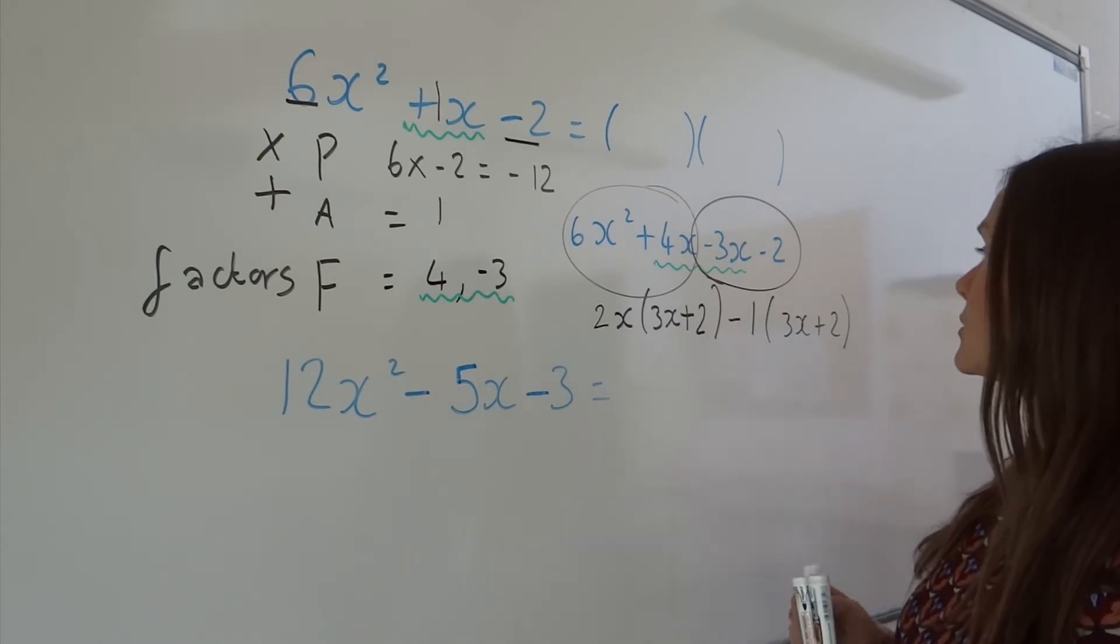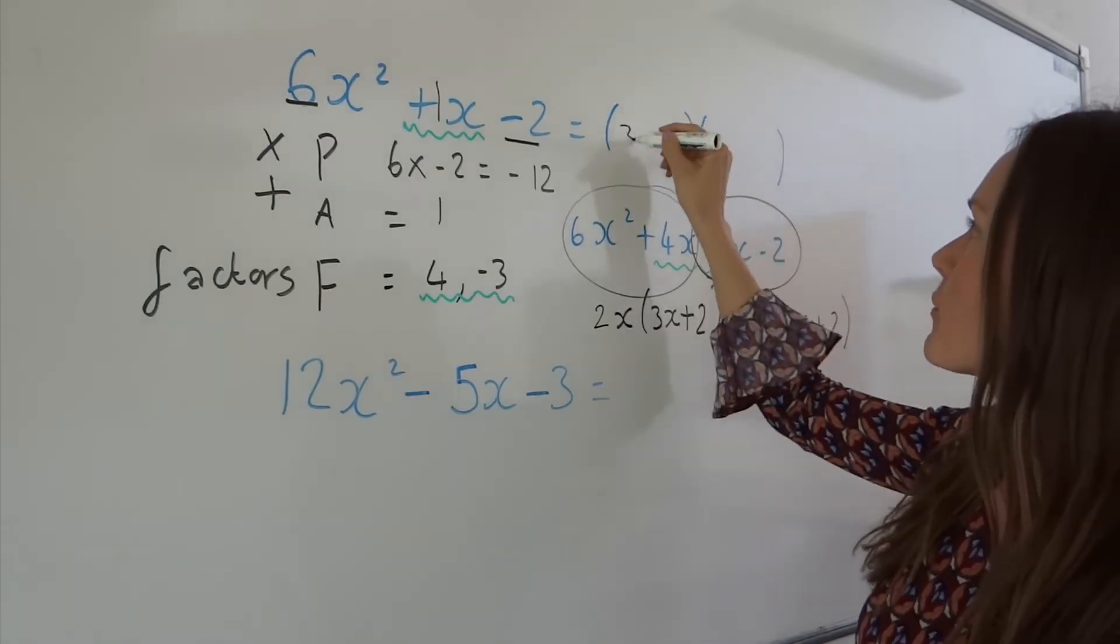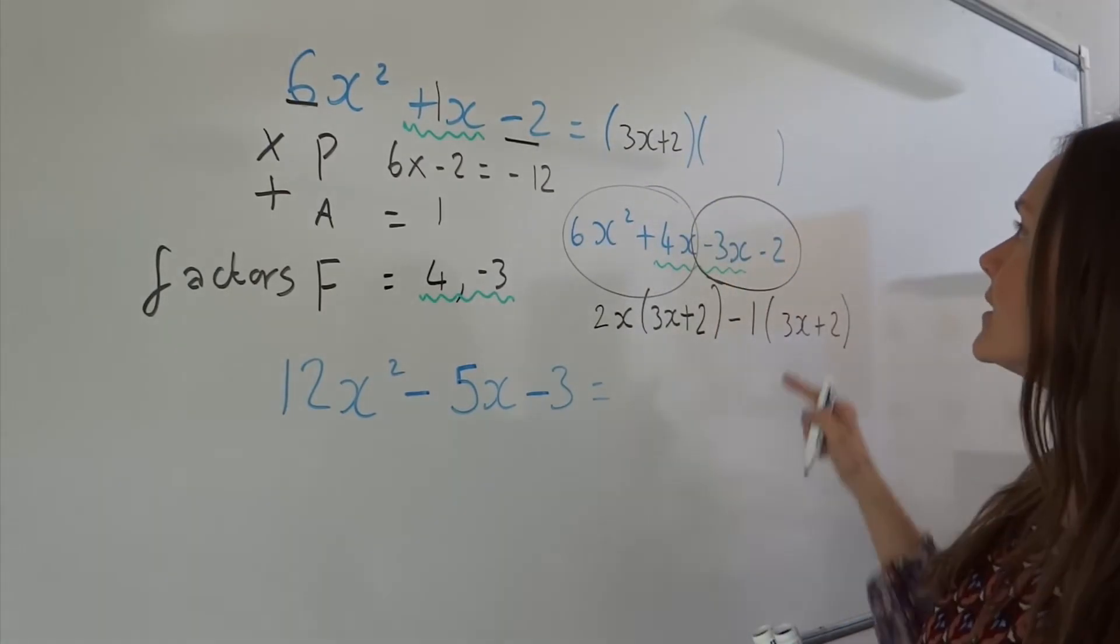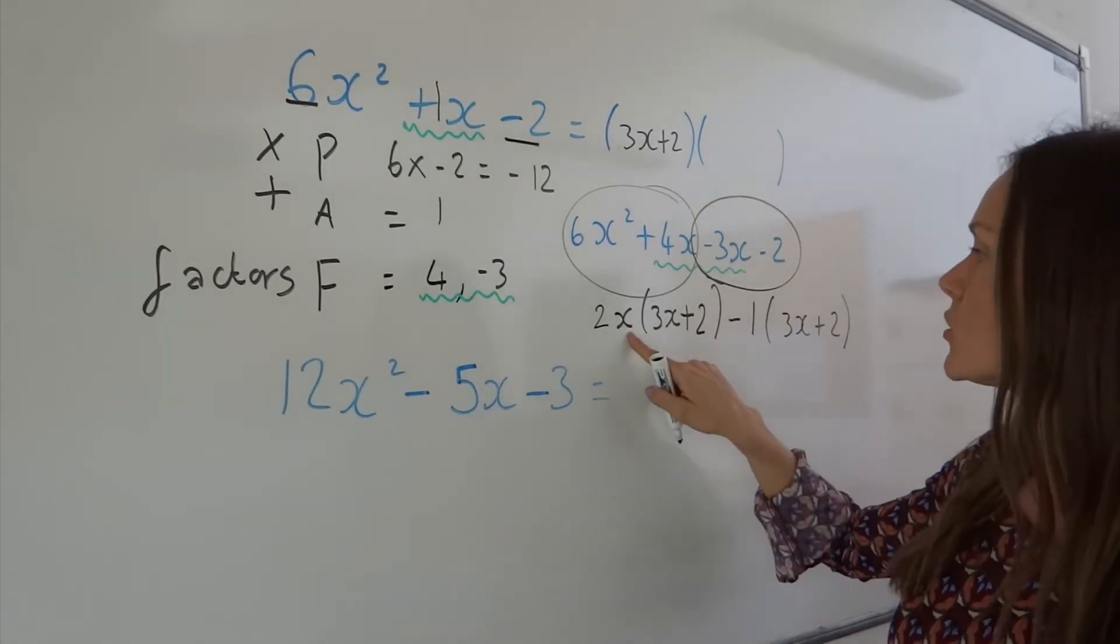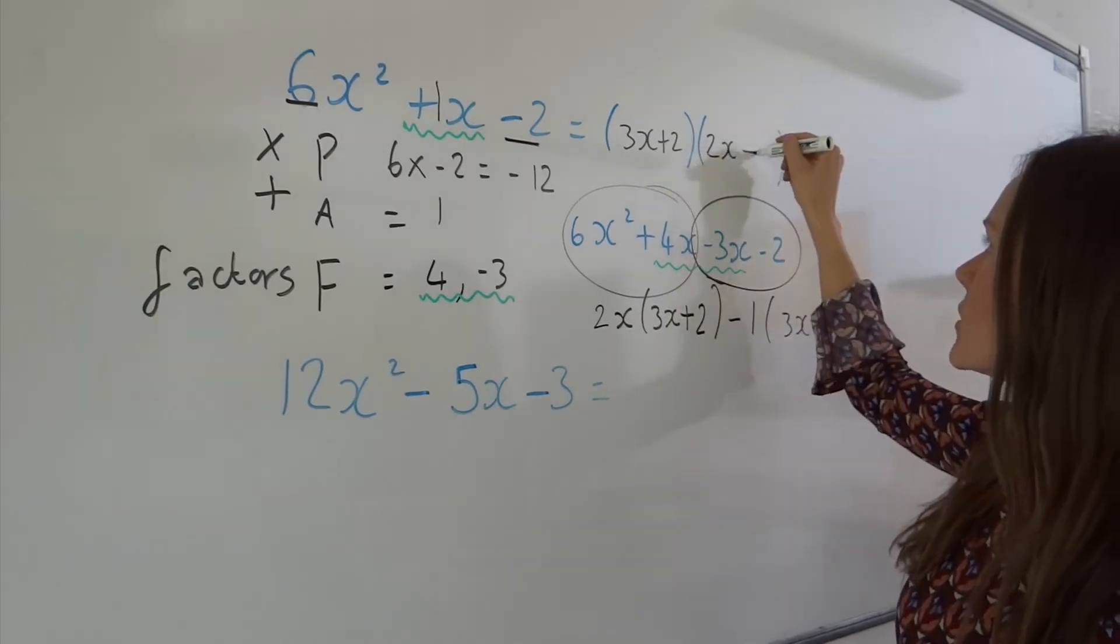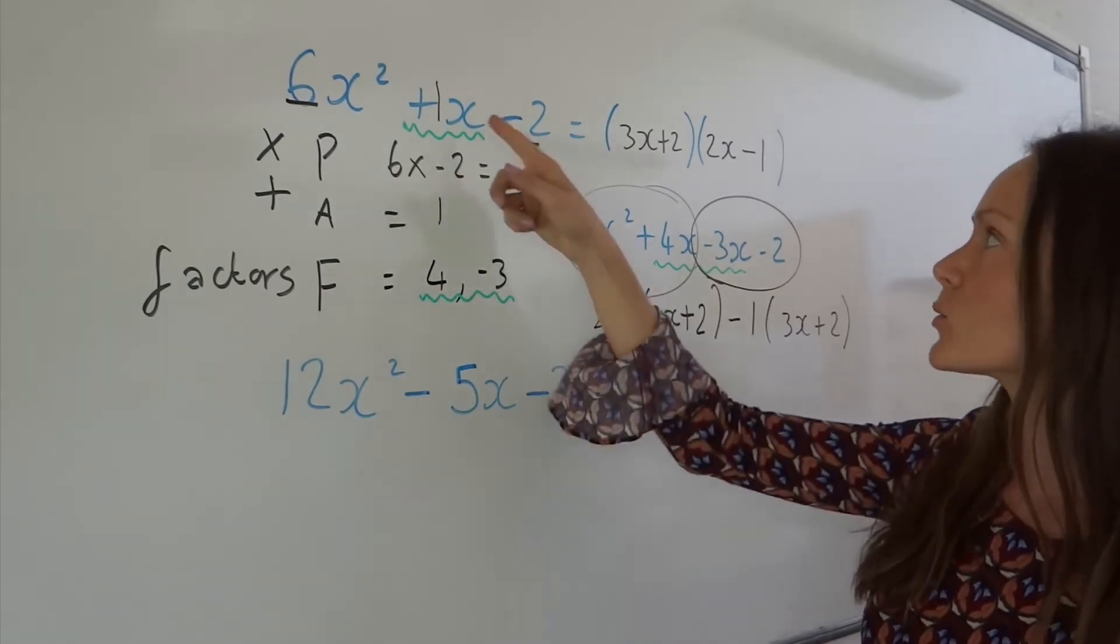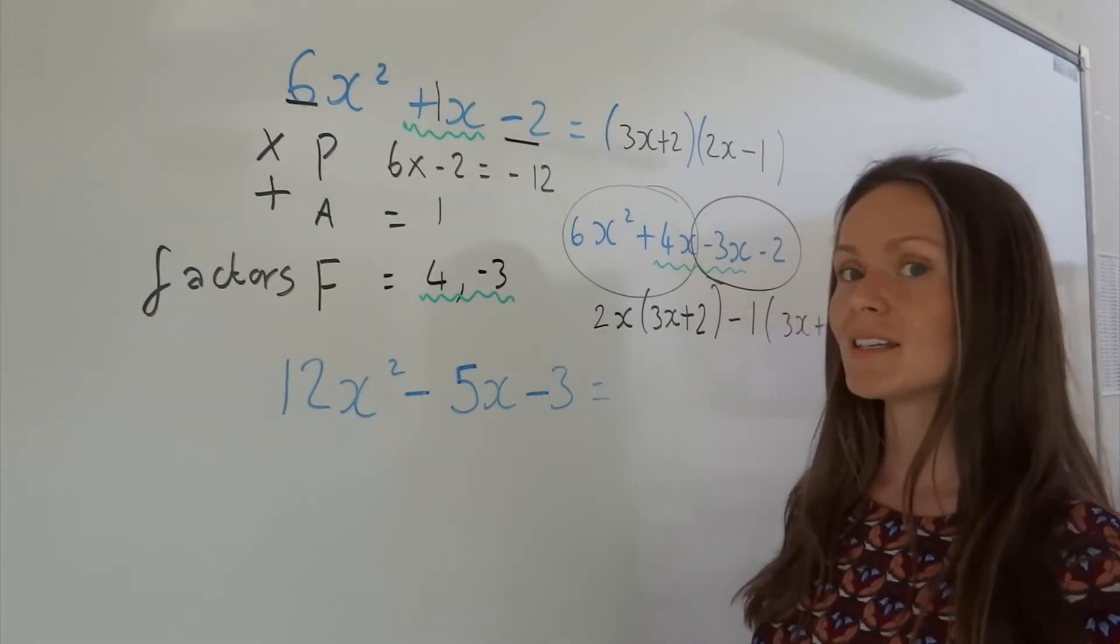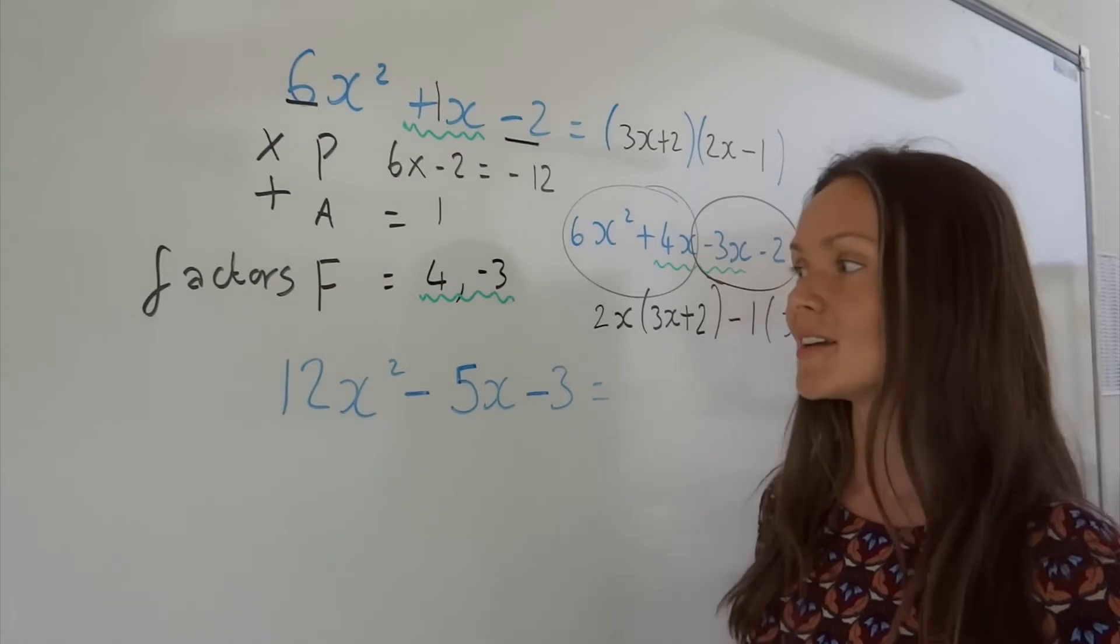We've got one final step left in our factorising here. The bracket that's repeated is the first bracket, or it doesn't matter which order, so 3x plus 2, but you could write it there if you wanted to. And then in the second bracket are the parts that are left over. So we've got 2x here and this part here which is minus 1. So now I have factorised this quadratic. If you haven't seen this before, it might look a bit complicated, but once you've practised it a few times, it will become a bit easier.